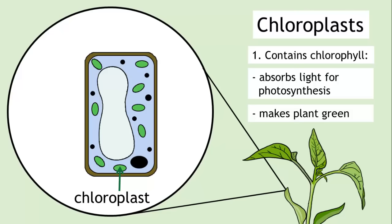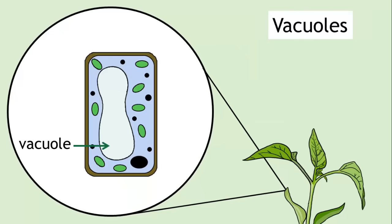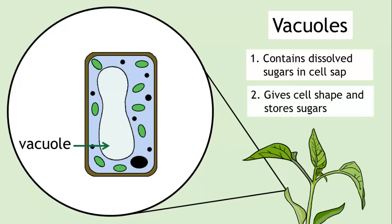Finally, plant cells also contain structures known as vacuoles. These are filled with a watery substance which contains dissolved sugars, called cell sap. The role of the vacuole is to provide support for the cell shape and to store sugars.